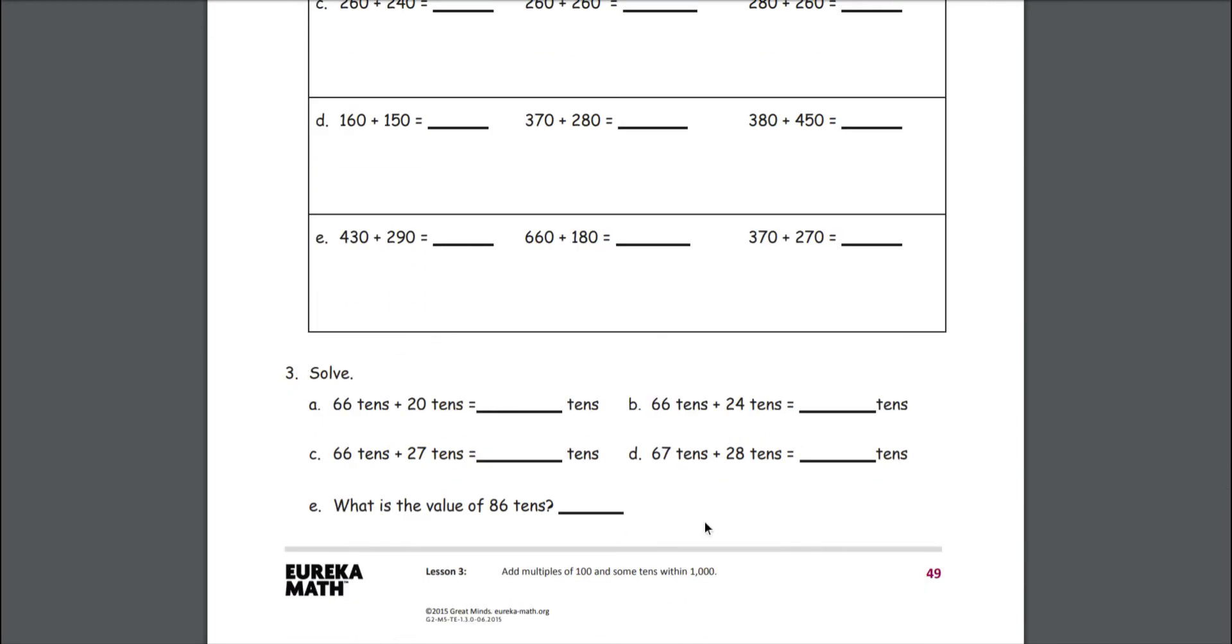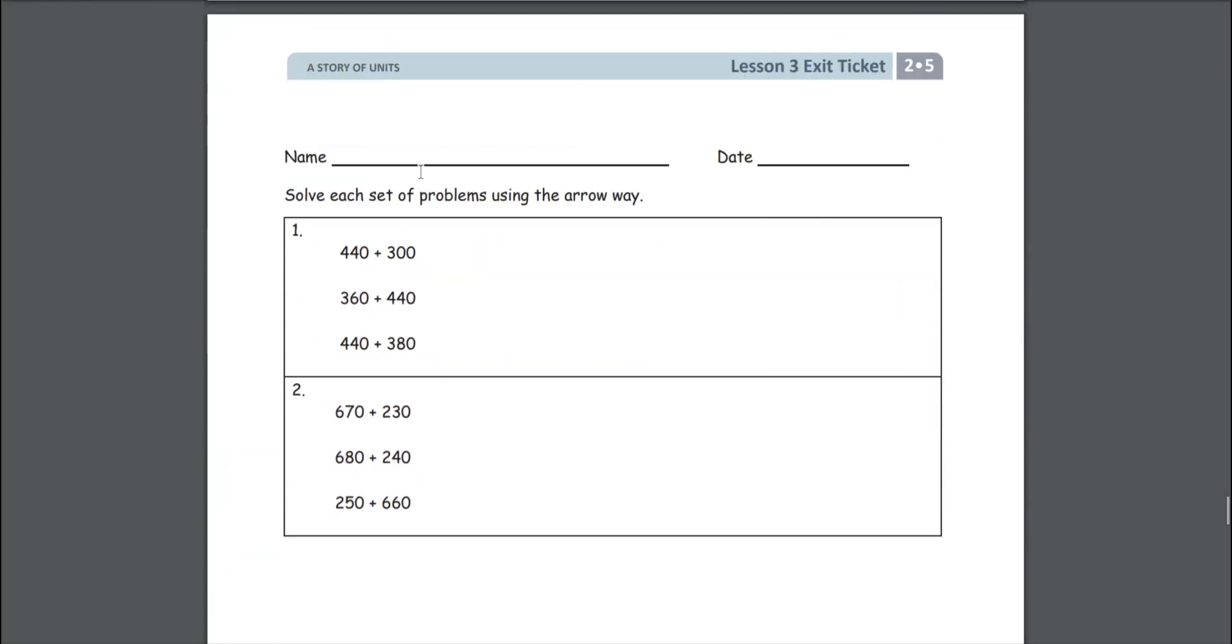You can see how number three is definitely progressively a little bit harder or more abstract than the problems above it. So set up must do's and can do's, but make sure you always align must do's with the exit ticket because that is the level of proficiency we want kids to be at for this lesson. It's what we would consider a success in this lesson.